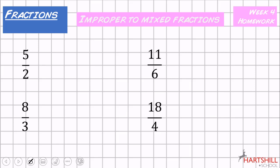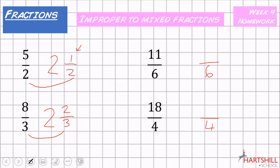The first one: how many twos go into five? That's two, with remainder one. Next: how many threes go into eight? That's two, remainder two. Note that the denominators always stay the same. How many sixes go into eleven? One, remainder five. How many fours go into 18? Four, eight, twelve, sixteen — that's four, remainder two. Two over four simplifies to a half, so the answer is four and a half.